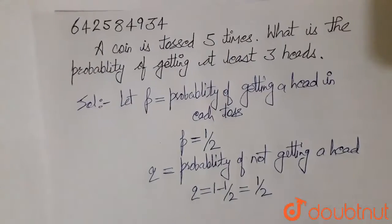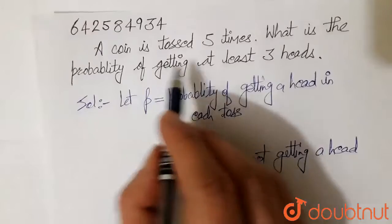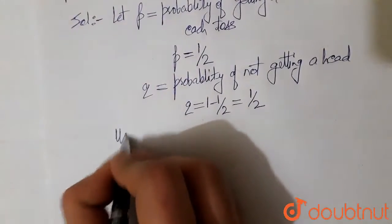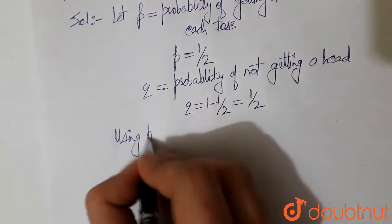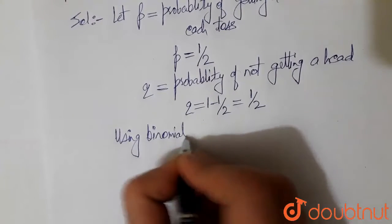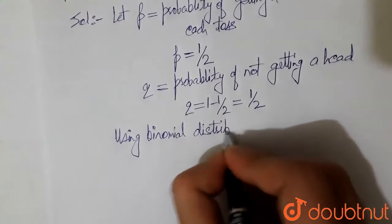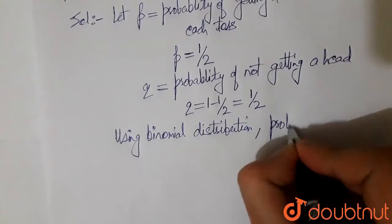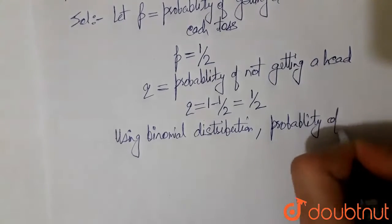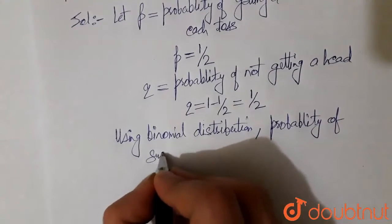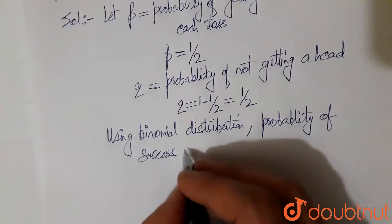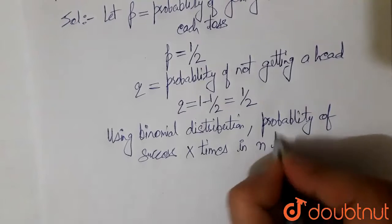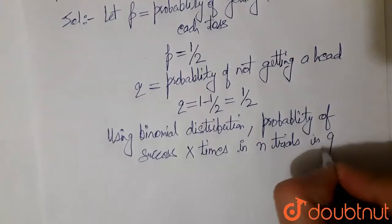Now, the coin is tossed 5 times, so this is a binomial distribution. Using binomial distribution, we know probability of success X times in n trials is given as...